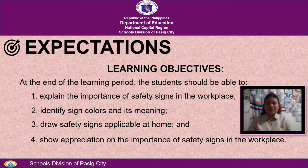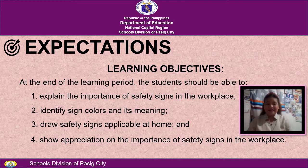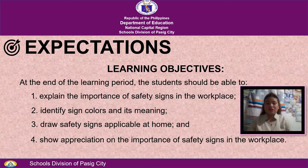Learning objectives. At the end of the learning period, the student should be able to: 1. Explain the importance of safety signs in the workplace. 2. Identify sign colors and their meaning. 3. Draw safety signs applicable at home. 4. Show appreciation on the importance of safety signs in the workplace.